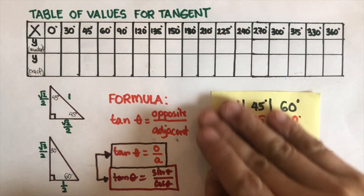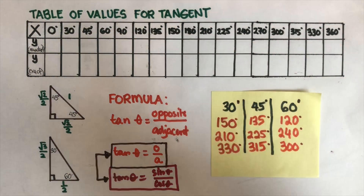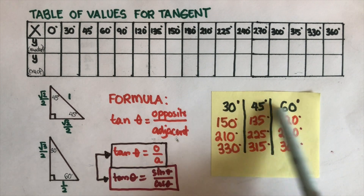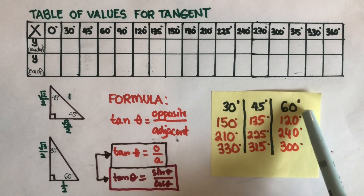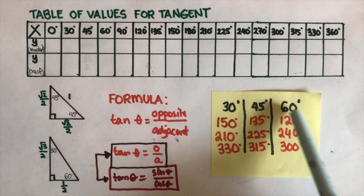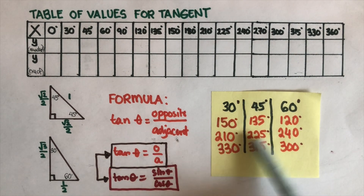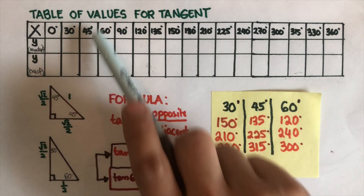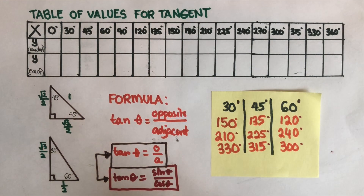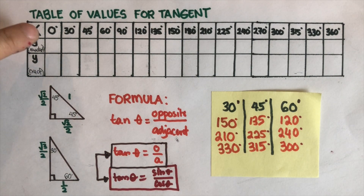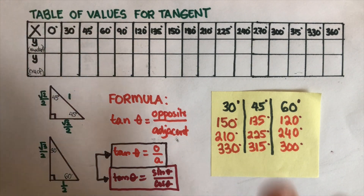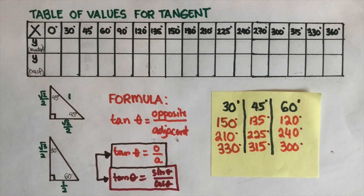We did this in the previous video. If we get the measures of these reference angles, we can get the measures for all of them. The same thing applies for tangent. So let's leave zero and 90 blank for now — we'll go back to those.